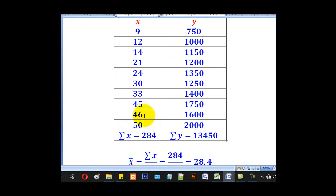Now n is the number of pairs. When you count 1, 2, 3, 4, 5, 6, 7, 8, 9, 10. That means our n is 10.